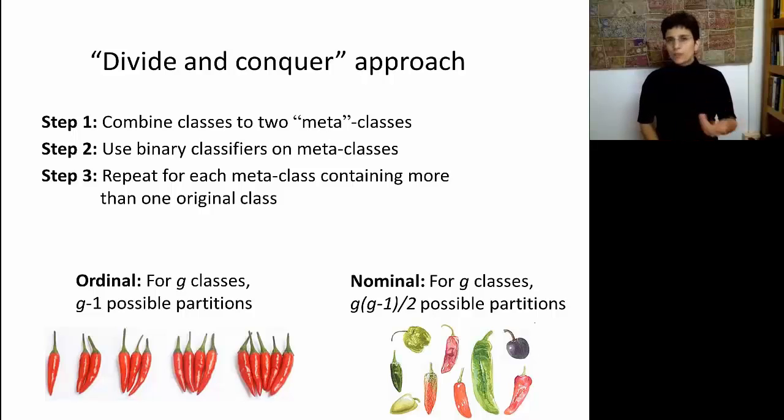The problem with doing this is that you're going to have to do quite a few analyses. For example, if the classes are ordinal, then if you have g classes, you're going to have to do g-1 possible partitions into meta-classes. For nominal, it's even worse. You're going to end up with g times g-1 over 2 possible partitions. So although this is possible, this is not really the best solution.